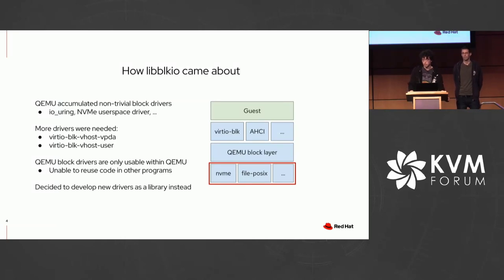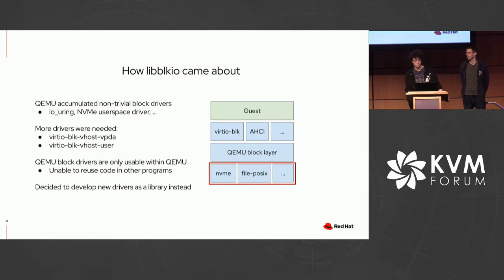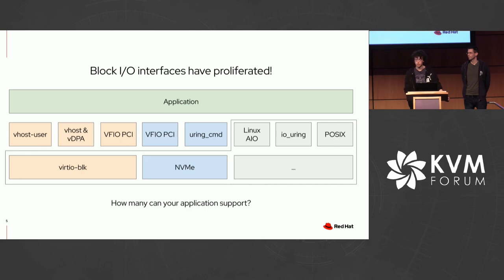LibBlockIO, the library we're presenting here, actually came out of QEMU. In QEMU, there are block drivers, and over time, QEMU really accumulated a lot of different block drivers, from simple io_uring bindings to actual user space NVMe drivers. More drivers were needed — in particular, recently, the VirtioBlock Vhost VDPA and VirtioBlock Vhost User. The code for these drivers, although QEMU-specific, could generally be made more generic and used by other applications. So we decided to develop these new drivers in a separate library — that's really where LibBlockIO comes in.